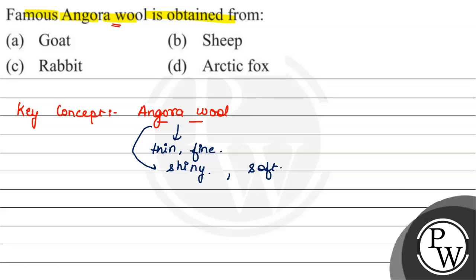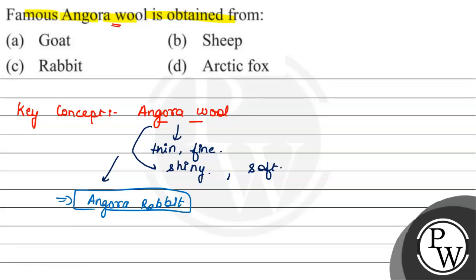Now, where do we obtain Angora wool from? It is obtained from the Angora rabbit — the Angora rabbit is the source of Angora wool. So our correct answer is option C. Option A is wrong, option B is wrong, option D is wrong.